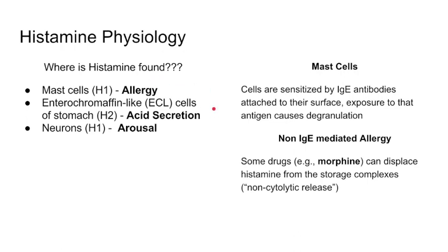Number two: enterochromaffin-like cells, ECL cells, which are located in the stomach. Those are H2 receptors — histamine 2 receptors — and they are one of the components of acid secretion. We won't be talking much about that today because those are H2 blockers, but as the year goes on, we'll be talking about that. Finally, we have neurons. Histamine is actually a neurotransmitter found in neurons, and that is mediated by the histamine 1 receptor again. Remember that histamine mediates arousal — that'll come into play when we talk about what some of the histamine agents are used for.